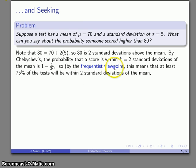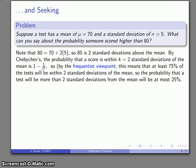So again, taking our frequentist viewpoint, at least 75% of the test scores will be within two standard deviations of the mean. So the probability that somebody is going to have a score higher than 80 is going to be at most 25%.